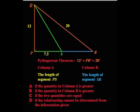So we know that 12 squared plus PR squared equals 20 squared. A little arithmetic tells us that 144 plus PR squared equals 400, and if we subtract 144 from both sides, we then get PR squared equals 256.